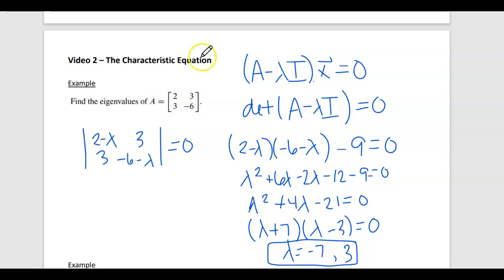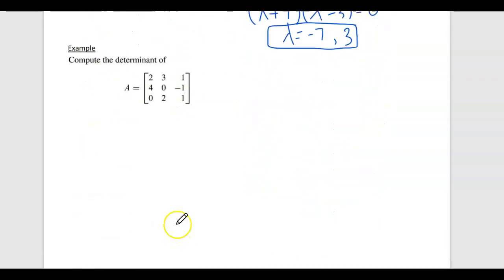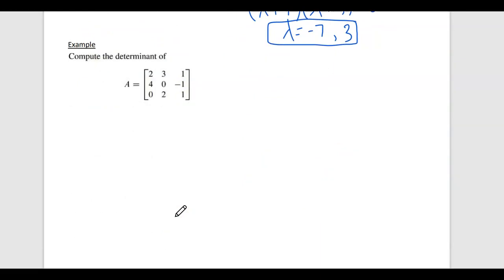All right, let's look at another example. So let's look at this determinant. And then it doesn't have it in this example, but I want to make some connections, and we'll find the eigenvalues. So let's find the determinant by just doing, let's do this first column.